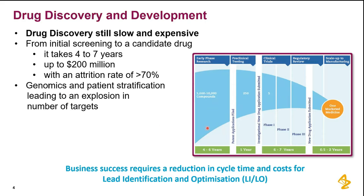Looking at the graph, we still start with a lot of compounds in the early stage and then many are filtered out along the way — maybe because of liabilities and toxicity — and in the end you have one marketed medicine after a couple of years and hundreds of millions of dollars. If we can improve our predictions and start with better compounds, the chance of getting something through is higher.